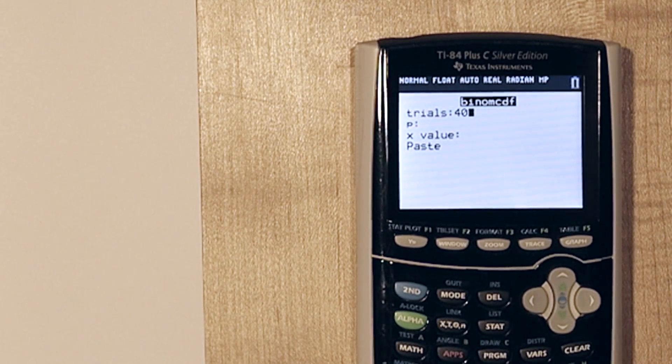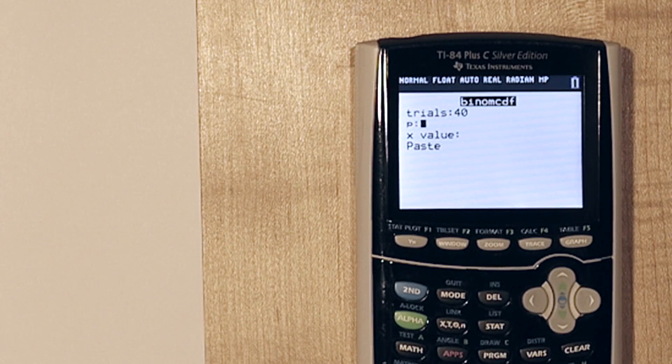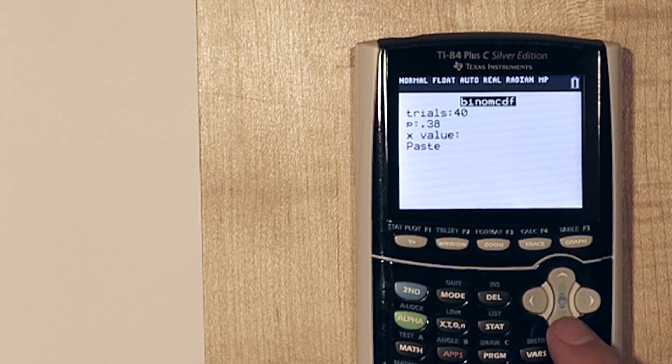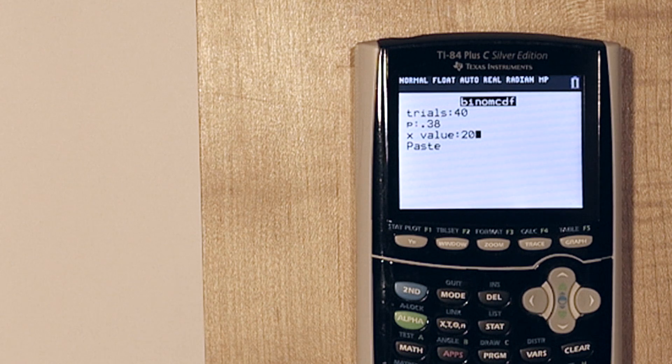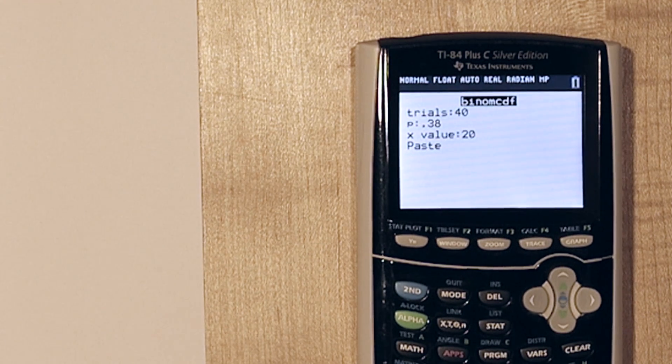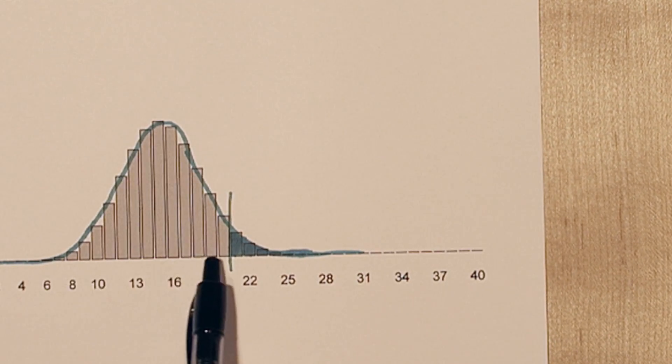So the number of trials is 40 because we asked 40 people. The probability is 0.38 because that's the probability that each individual wants a new mascot. And for x value, we're going to put 20. Binomcdf is going to tell us the cumulative probability of 20 or less people saying they want a new mascot. So that's all these bars right over here.